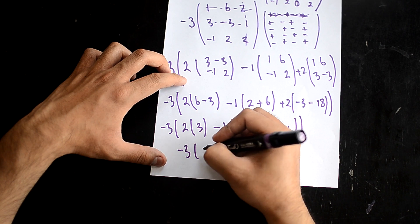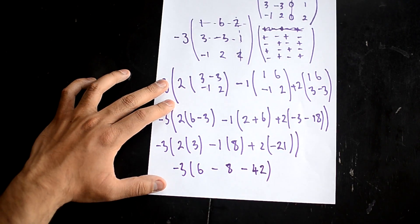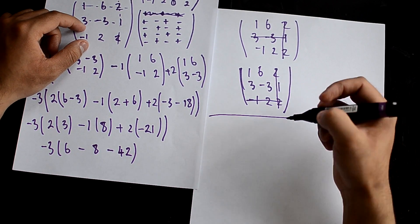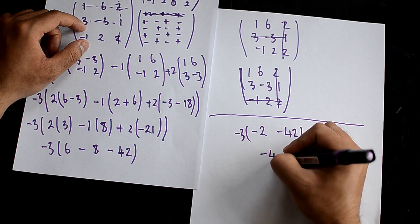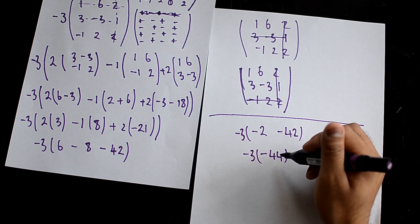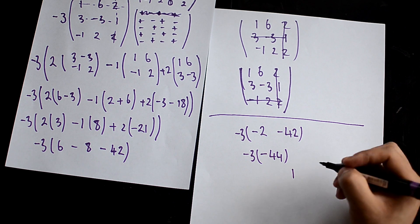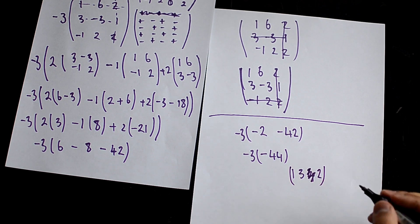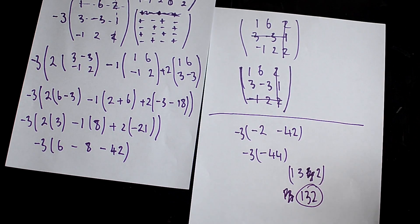Multiplying this out again: 6, minus 8, minus 42. So you have 6 minus 8, which is minus 2, minus 42. And then minus 2 minus 42 is minus 44. Now you have minus 44 times minus 3, which is 132. So your answer for this matrix is going to be 132, because minus 3 times minus 44 is 132.